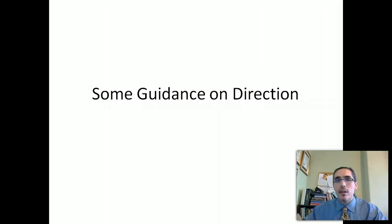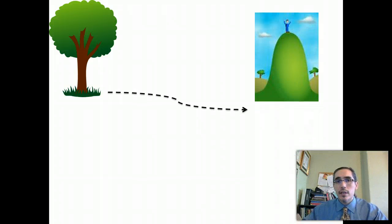Direction refers to the path along which something is pointing or moving. It leads from one location to another. For example, we can say that we plan to travel from the tree to the hill or to the waterfall.